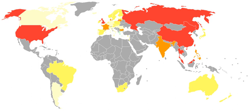The privacy laws of the United States deal with several different legal concepts. One is the invasion of privacy, a tort based in common law allowing an aggrieved party to bring a lawsuit against an individual who unlawfully intrudes into his or her private affairs, discloses his or her private information, publicizes him or her in a false light, or appropriates his or her name for personal gain.